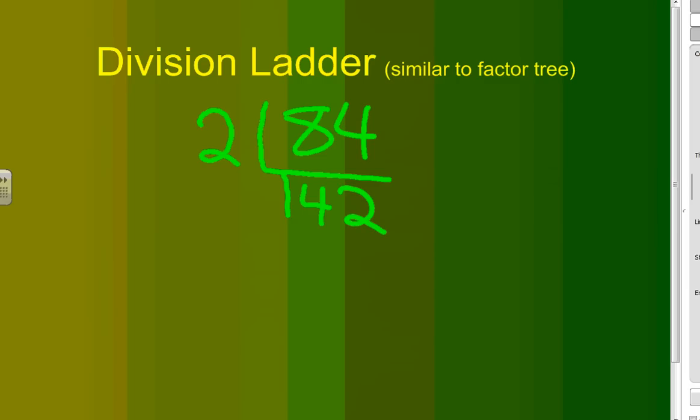Again, I need to start with the lowest prime number, 2, and determine whether this number is divisible by 2, and it is. 42 divided by 2, then, is 21.